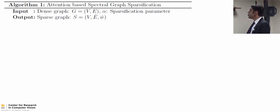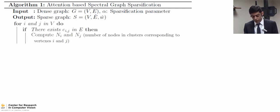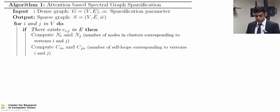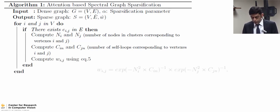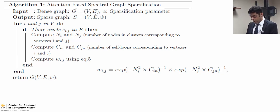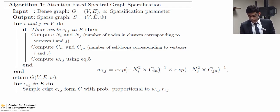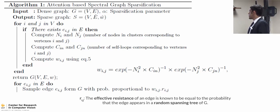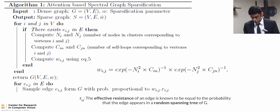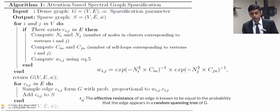With these, we define edge weights using an exponential function of these two parameters, giving a normalized weight between 0 and 1 based on the importance of the two nodes on the sides of each edge. The sparsification algorithm takes an unweighted graph and a sparsification parameter as input and produces a sparsified graph. For each two vertices, we decide if there's an edge, compute an edge weight based on cluster size and self-loops, and sample edges from the weighted graph based on a probability proportional to the weight and the effective resistance of that edge. The effective resistance measures how important an edge is for keeping the structure of the graph.